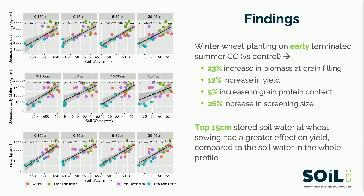Our results also showed that winter wheat planted on early terminated cover crop plots contributed to increases in biomass yield, grain protein content, and screening size. More importantly, our results also showed that surface soil moisture at planting played a significant role in yield.